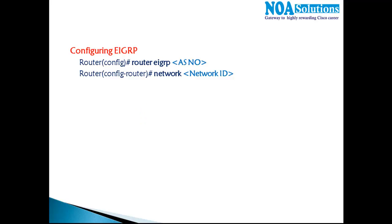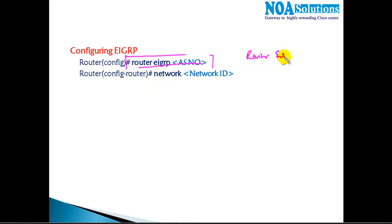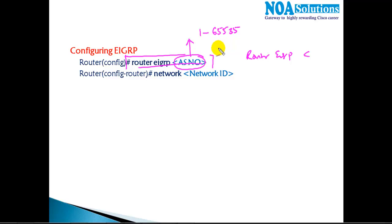The configuration is simple and similar to RIP configuration. In the first line we need to say 'router eigrp' and then define an autonomous system number. This number can be any number ranging from 1 to 65535 and can be given by the administrator — it's not mandatory that it be the AS number given by the service provider.